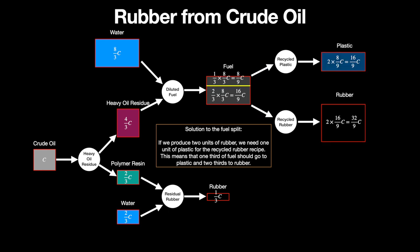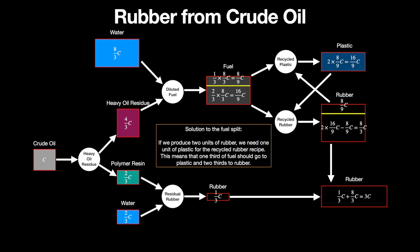So 8/9 C fuel goes to recycled plastic, producing 16/9 C plastic. And 16/9 C fuel goes to recycled rubber, producing 32/9 C rubber. Of that rubber, 8/9 C is needed at the recycled plastic, so it's sent back there. The remaining 8/3 C is left over. This combined with the 1/3 C from residual rubber gives a total yield of 3 C, meaning we get 3 rubber for each crude oil entered into the system.